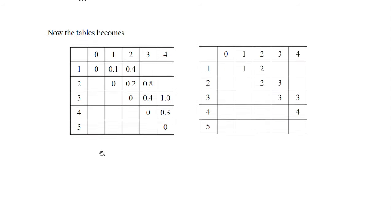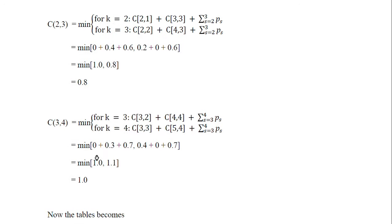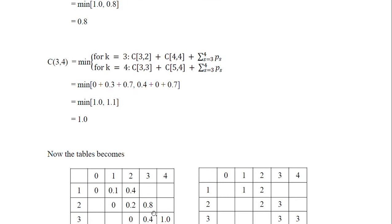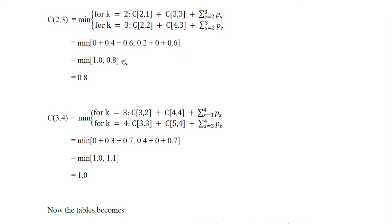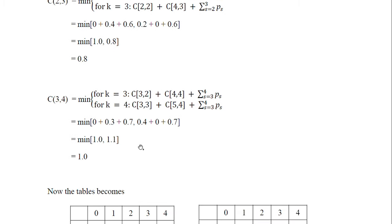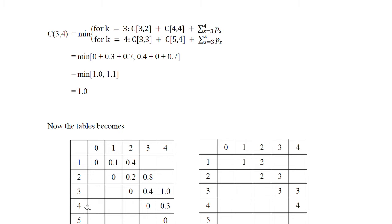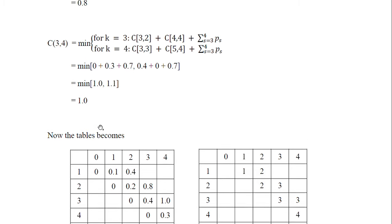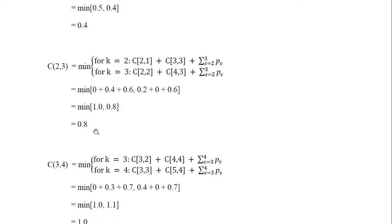Next we find C(2,3). Applying the formula, we get values 1.0 and 0.8. The minimum is 0.8, obtained for k=3. So C(2,3) = 0.8, and in the root table C(2,3) = 3. Similarly we calculate C(3,4) and fill in the corresponding entry in both the C(i,j) table and the root table.